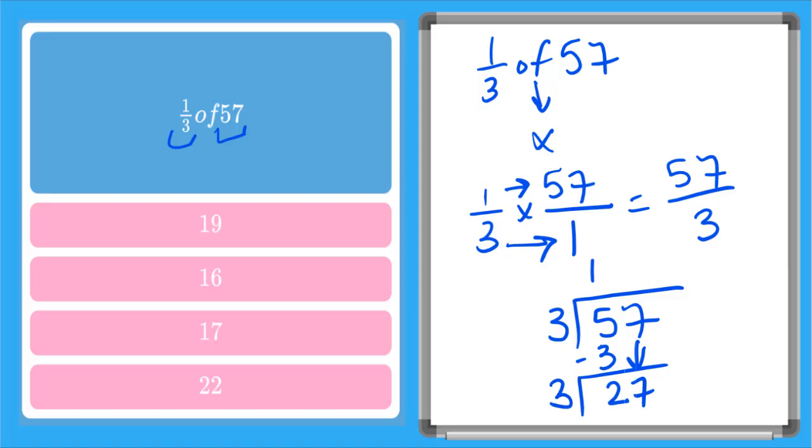Three goes into twenty-seven. If you know from your three fact family, nine times. That gives me twenty-seven with zero left over. So I get the whole number, nineteen, as my answer. Good work.